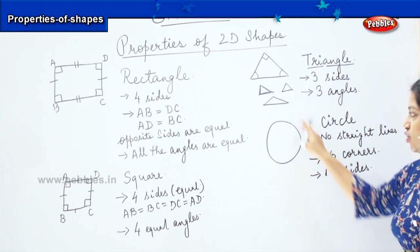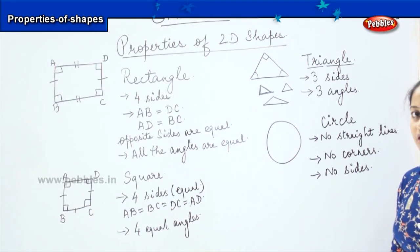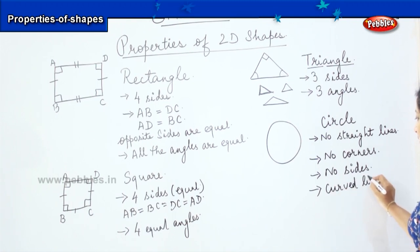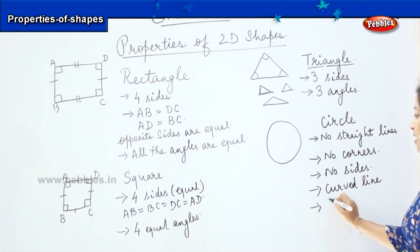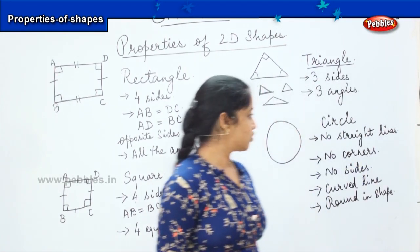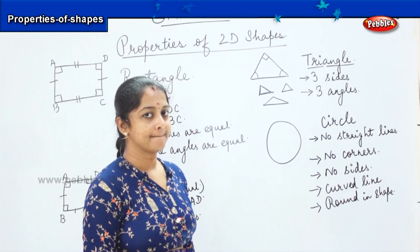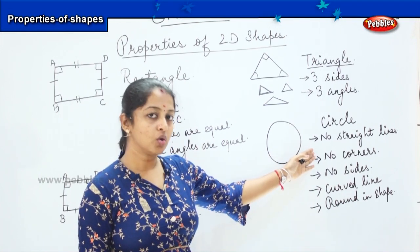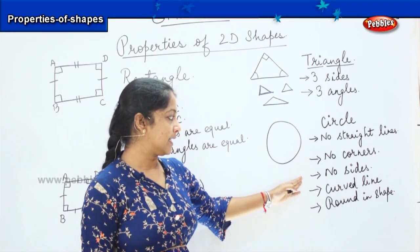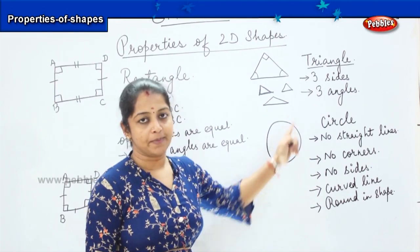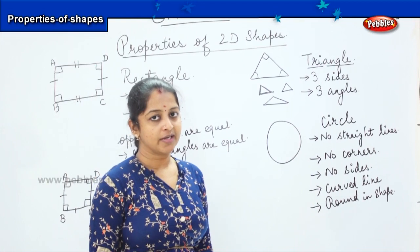What kind of line is used in a circle — is it a straight line or a curved line? Here it is formed with a curved line, and it is round in shape. So let us revise the features of a circle: it has no straight lines, it has no corners, it has no sides, and it is formed with a curved line to make a round shape. Are you clear with the features of the 2D shapes?